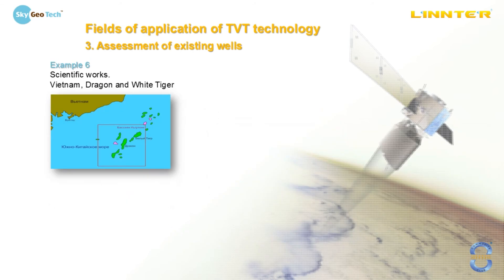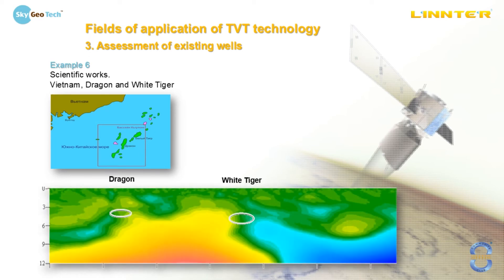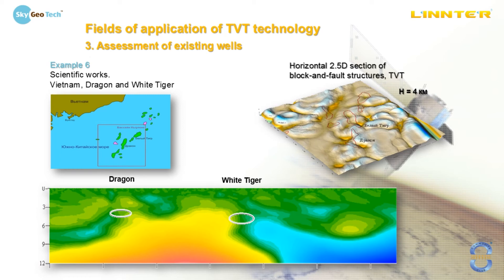Example: scientific works in Vietnam — Dragon and White Tiger deposits. Our team made an exploration and built various TVT images to see the conditions for hydrocarbon formation in this area. On the block-and-fault structure vertical profile, we can see that these deposits are located in the transitional zones between dense rock in red color and compaction zones in blue color. This is the reason why the deposits are exactly in this spot. We also built a 2.5D map to see the geometry of the area.